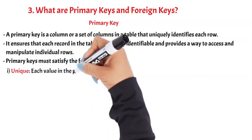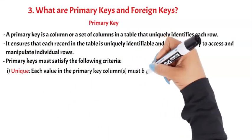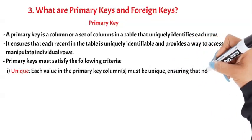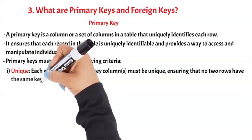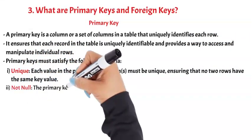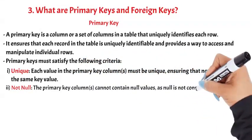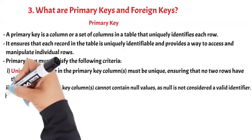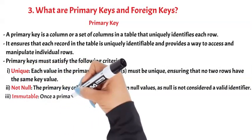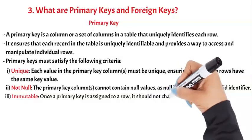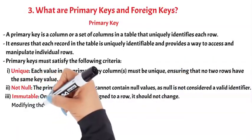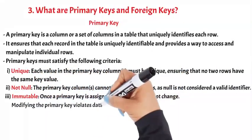Unique. Each value in the primary key columns must be unique, ensuring that no two rows have the same key value. Not Null. The primary key columns cannot contain null values as null is not considered a valid identifier. Immutable. Once a primary key is assigned to a row, it should not change. Modifying the primary key violates data integrity.